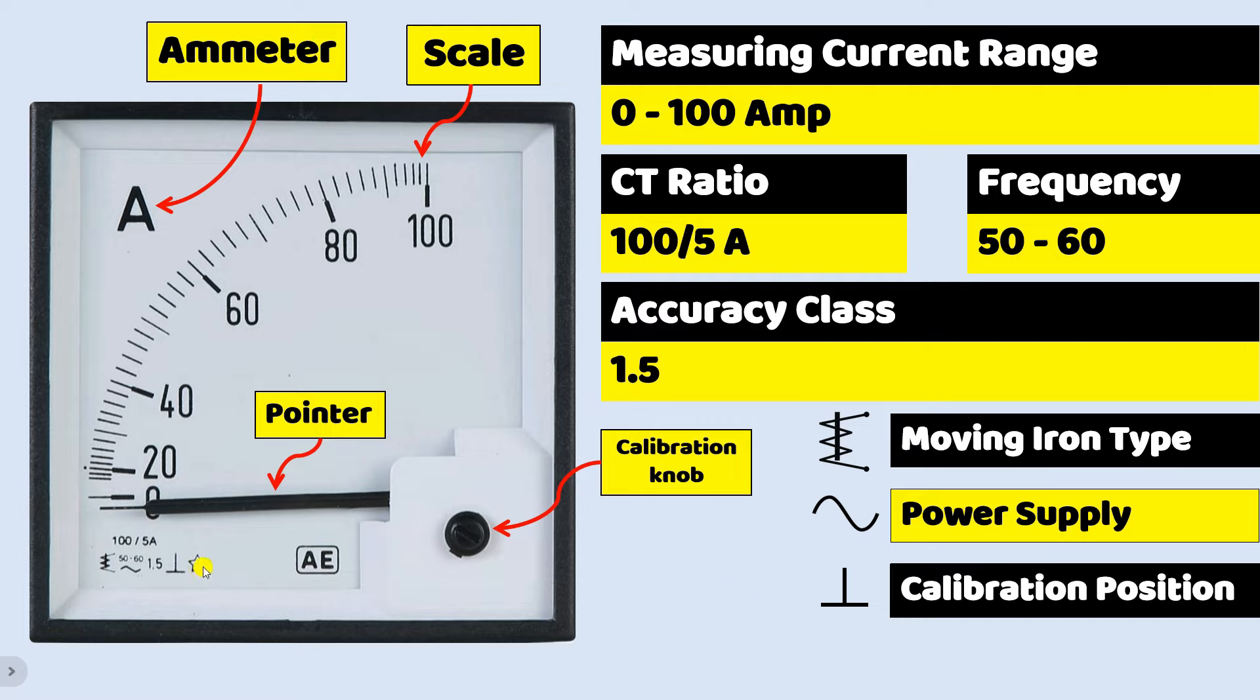Apart from this, you can see this star symbol here. It has two written inside it. It means dielectric test. It means how much voltage is provided to this ammeter and tested it. This detail is given here. If two is written here, it means that it has been tested at 2000 volt.